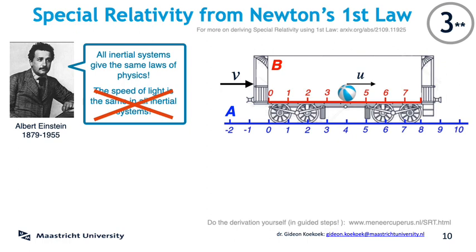A student of mine, himself a teacher, translated this derivation as a website for students, where they are guided through the derivation including exercises and hints and answers, all in English. That link is given at the bottom of this slide. Feel free to skip the next few slides if you want — its outcome is just what we already know: special relativity. Let's go through the main steps. We'll take two inertial systems A and B. Since they are both inertial systems, their relative velocity V must necessarily be a constant.